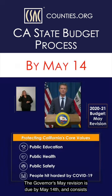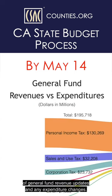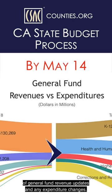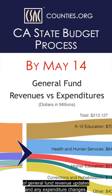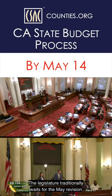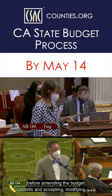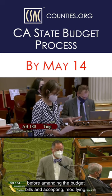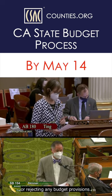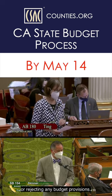The Governor's May revision is due by May 14th and consists of general fund revenue updates and any expenditure changes. The Legislature traditionally waits for the May revision before amending the budget bills and accepting, modifying, or rejecting any budget provisions.